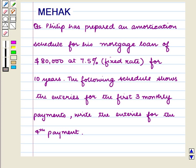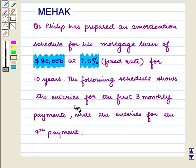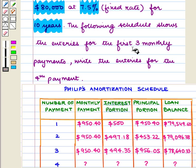Hello and welcome to the session. In this session we are going to discuss the following question: Philip has prepared an amortization schedule for his mortgage loan of $80,000 at 7.5% fixed rate for 10 years. The following schedule shows the entries for the first three monthly payments. Write the entries for the fourth payment.